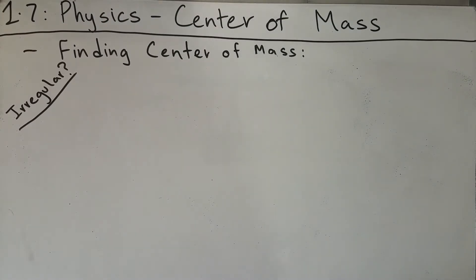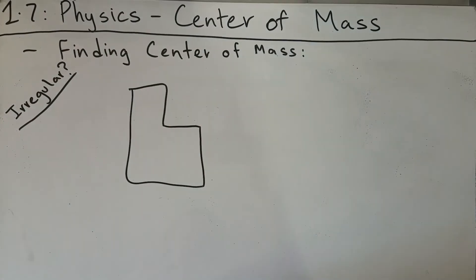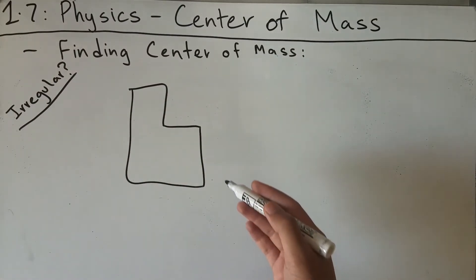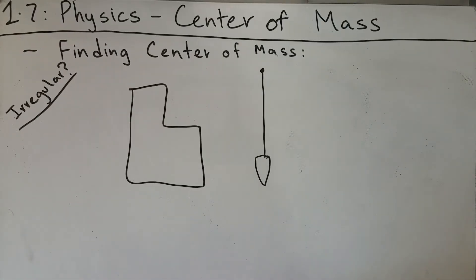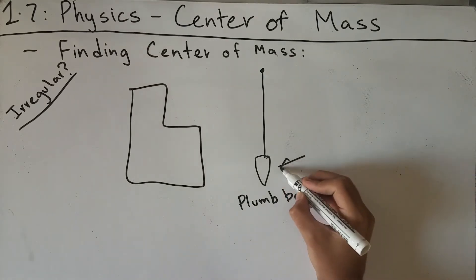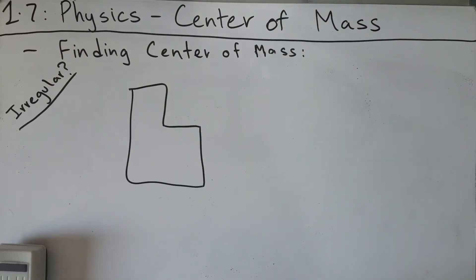But what if you have an irregular object? Say you have a wooden plank cut in an irregular shape, where all the edges are different lengths. In this case, to find the lines of symmetry of irregular objects, we use something called a plumb bob. This bob is filled with a heavy metal like lead, so it has significant mass inside it. We use the plumb bob to figure out the lines of symmetry of an irregular object like this wooden plank.